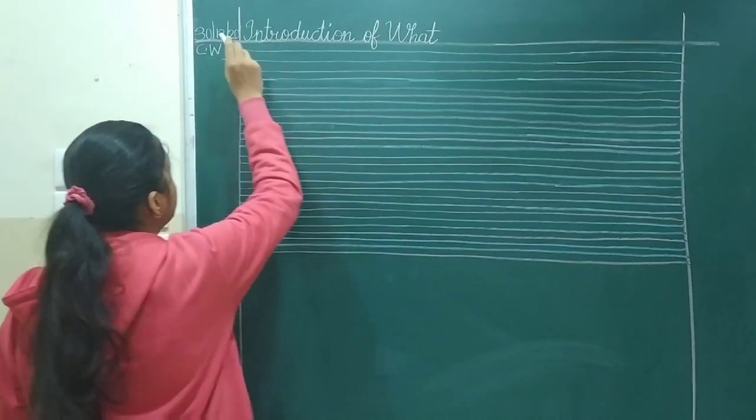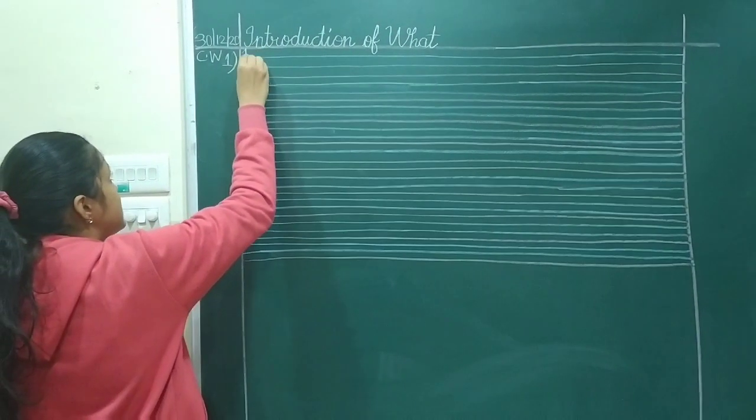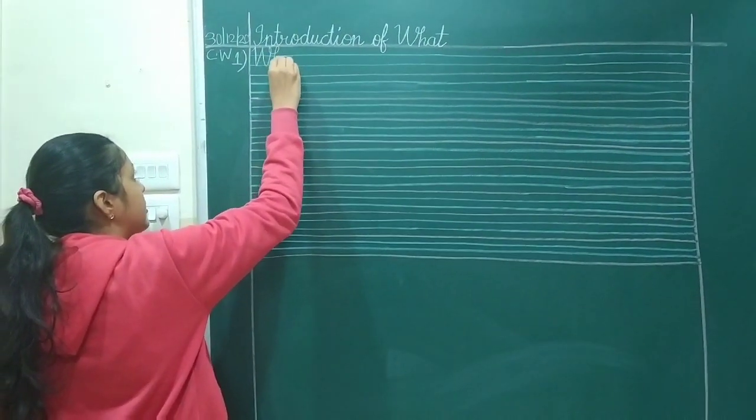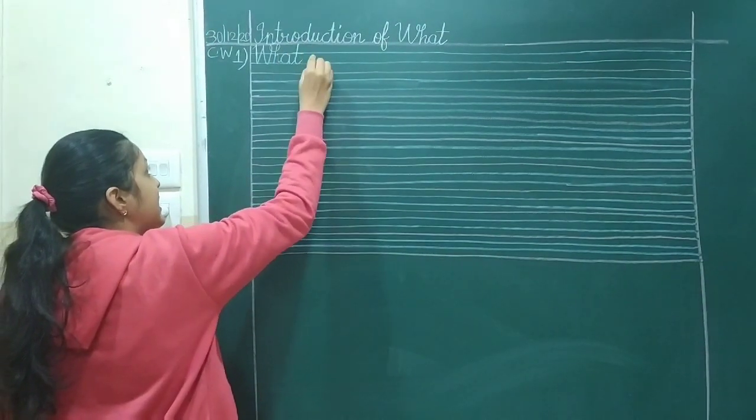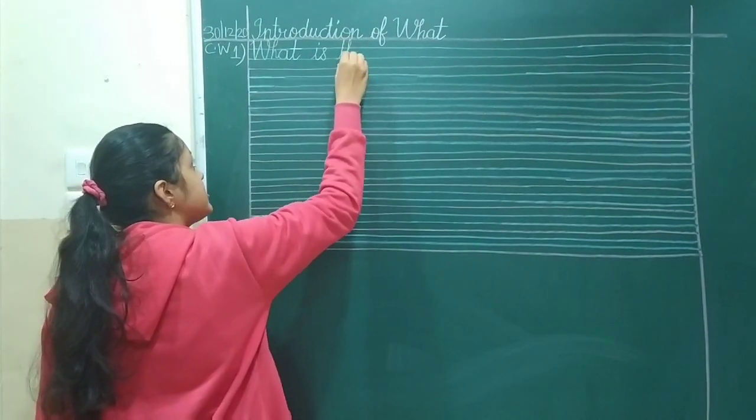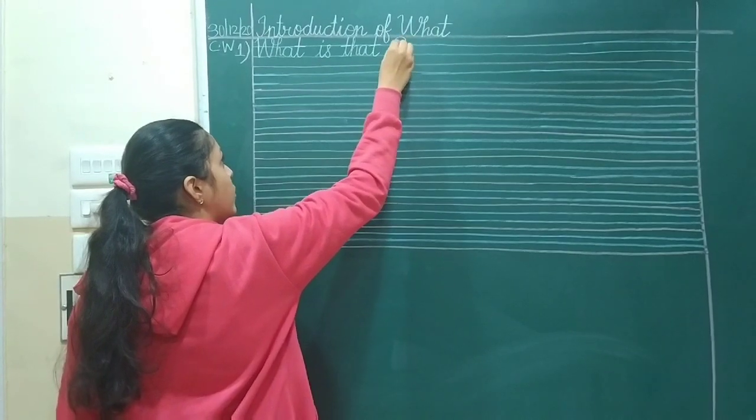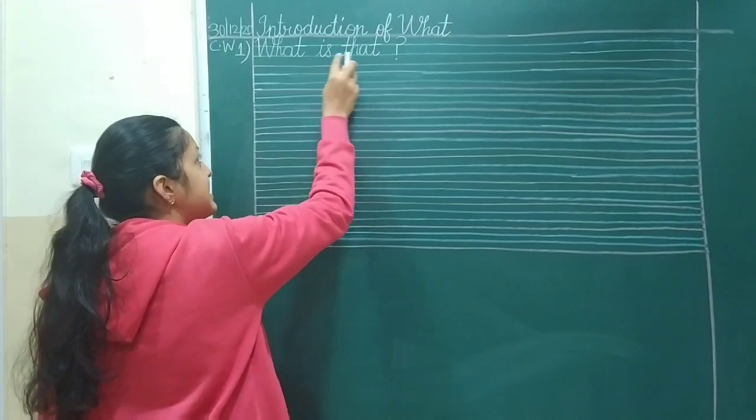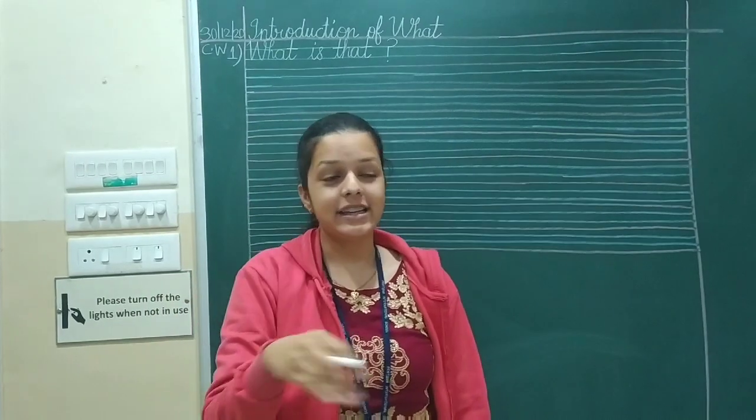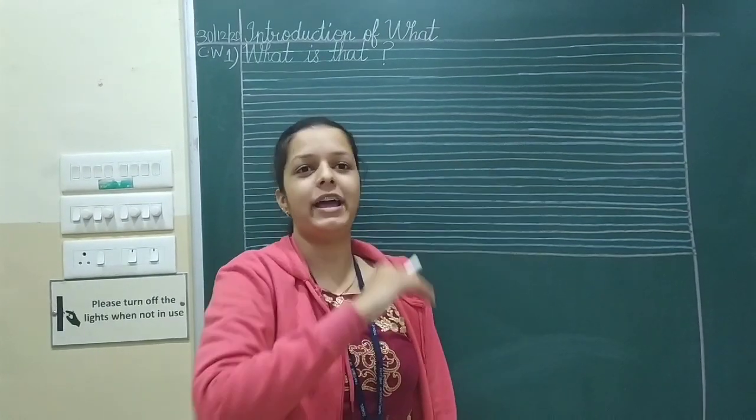Introduction of what? Today's date, CW. And first question. We are going to write capital W. What's W-H-A-T. What is that? T-H-A-T. That. Okay. Question mark. Now, what is that? What is that? It is far away from us.